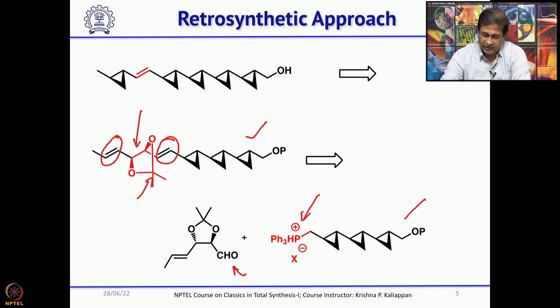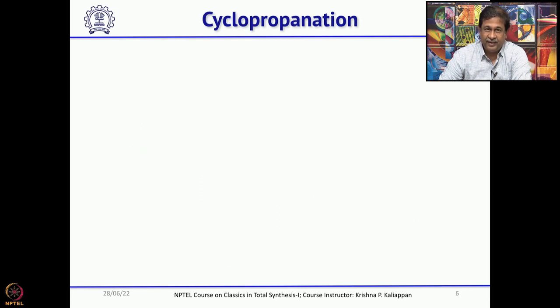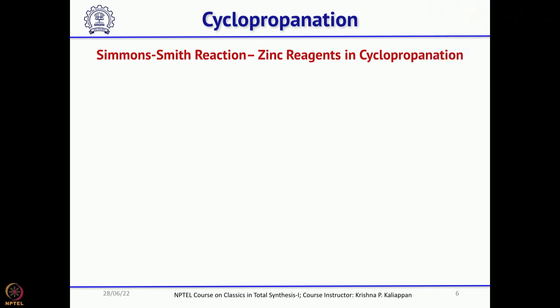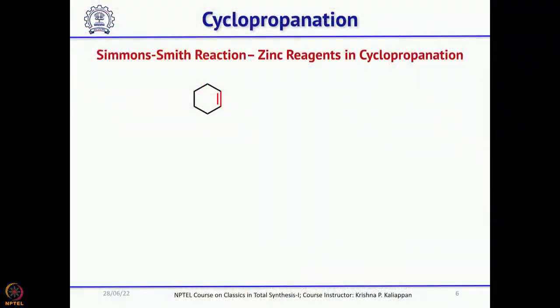Now you need a proper method to make this particular fragment with three cyclopropanes. Looking at the literature for available methods for cyclopropanation, one method which should come to mind immediately is Simmons-Smith cyclopropanation. If you take an alkene and treat it with diiodomethane in the presence of a zinc-copper couple at ambient temperature, you can easily cyclopropanate an alkene.